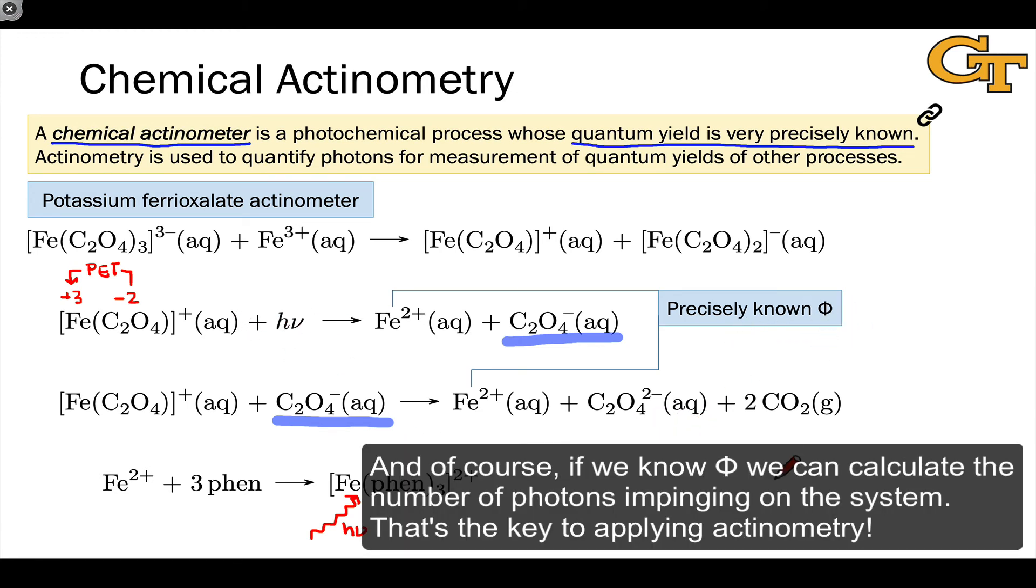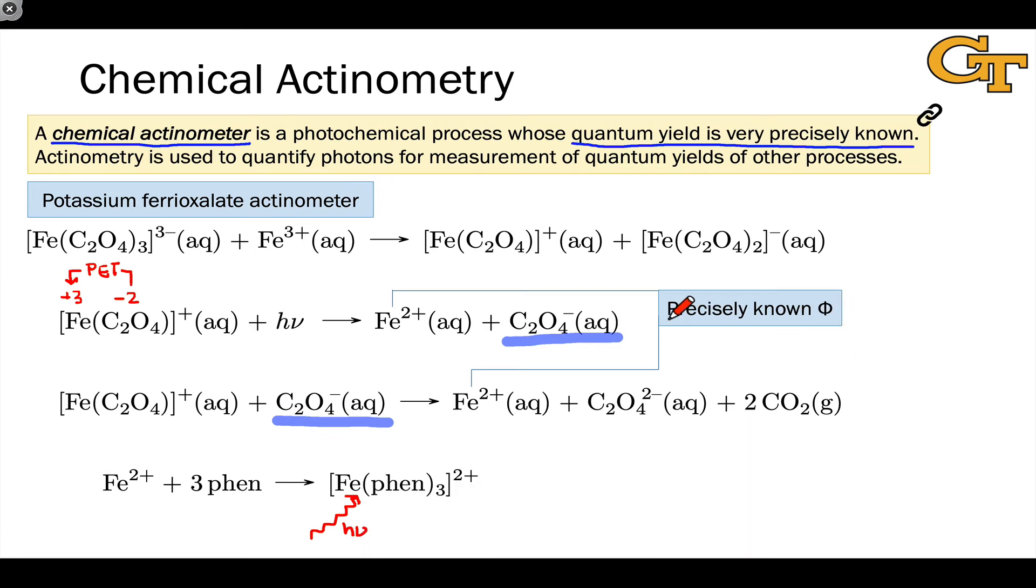We can calculate the quantum yield to a very precise degree. This has been done over the years many times. This is a classical actinometer, and the value of that quantum yield is very precisely known.